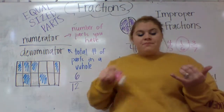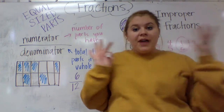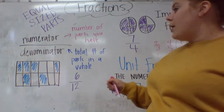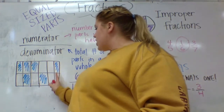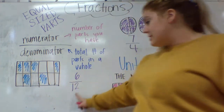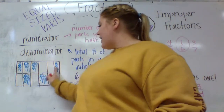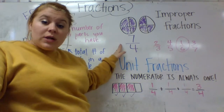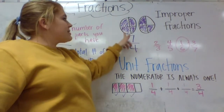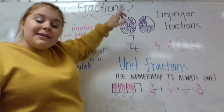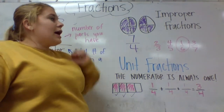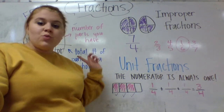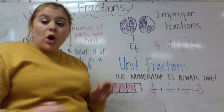Quick review: it's only a fraction if the pieces are equal-sized. The numerator is on top and tells you how many pieces you have. The denominator is on the bottom and tells you the total number of pieces in one whole — for example, 12 total pieces gives a denominator of 12, and 6 shaded gives a numerator of 6. For improper fractions, the denominator is not 8 just because there are 8 total pieces — it stays 4 because that's what makes one whole. An improper fraction is when the numerator is greater than the denominator. And unit fractions — all you need to know is the numerator is always 1.